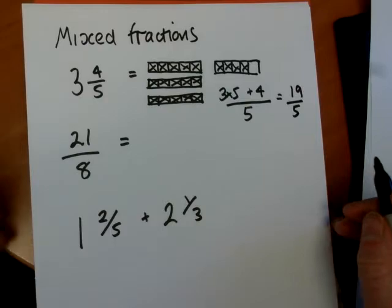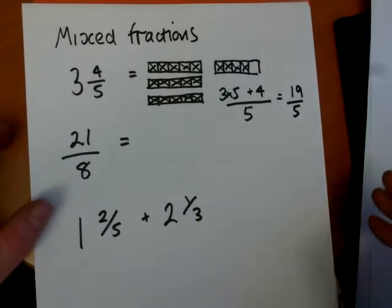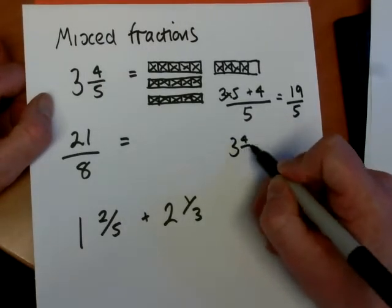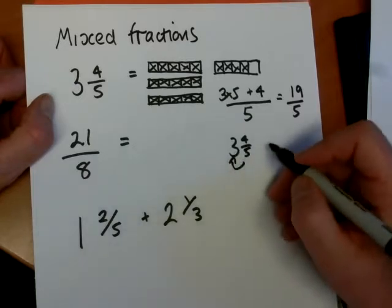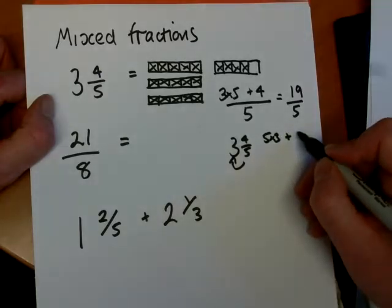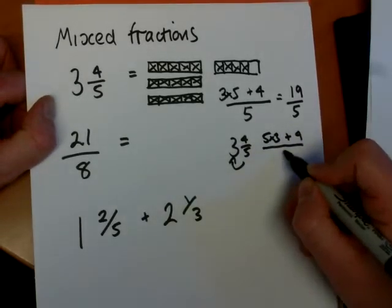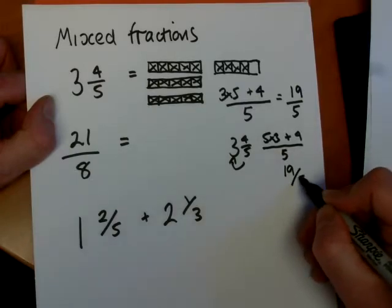You'll see why this technique is needed in the questions that follow. Now I don't need to draw bars every time, of course. If you look, I had 3 and 4 fifths. I simply did the 5, the denominator times the whole number, plus the existing numerator, the number on the top of the fraction, all over the 5, the denominator. And that gave me the 19 over 5.